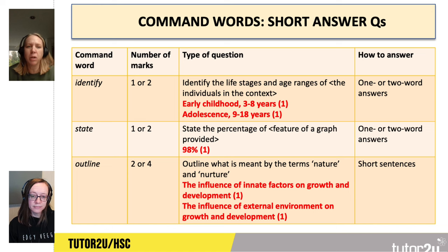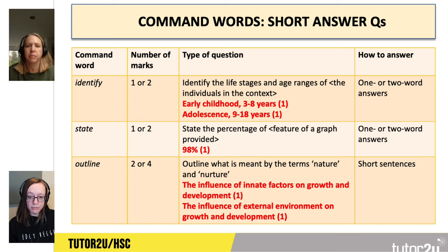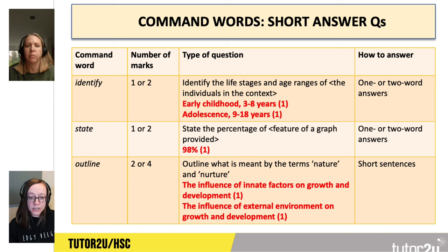For Unit 1, what command words can students expect in short answer questions? The identify command word is worth one or two marks — the most basic question you'll get. For example, identify the life stages and age ranges of individuals in a context. You don't need to write a full sentence; you can just write 'early childhood, three to eight years' — that would get you a mark. 'Adolescents, nine to 18 years' would get you a second mark. So it's literally one or two word answers.